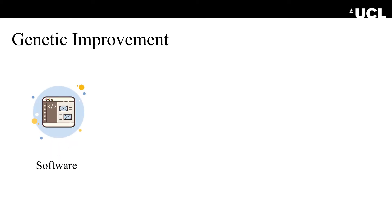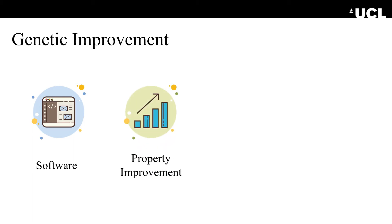For those of you who don't know, genetic improvement, or GI for short, aims at taking an existing software and automatically modifying it to improve a given software property. This property can be either functional or non-functional. For example, an example of functional improvement is automated software repair, where we get a software that's not passing all test cases and apply modifications to make it pass. Another example is the non-functional improvement of runtime, memory consumption, energy consumption, and so on.